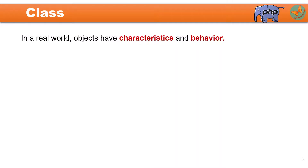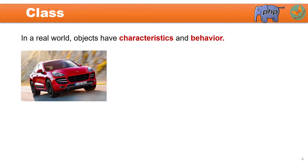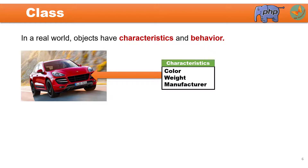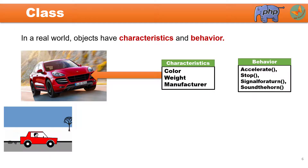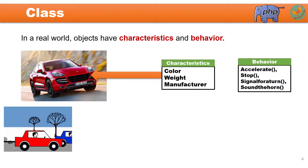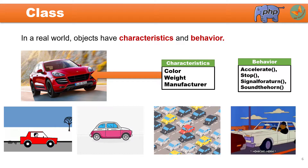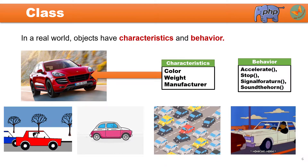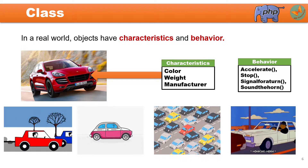Let us now try to understand what exactly is a class. In the real world, objects have characteristics and behavior. Take the example of a car. This car has characteristics or features such as color, weight, and manufacturer. The different behaviors exhibited by this car could be that it accelerates, it stops at any time, it takes a signal for a turn, or it sounds the horn. So these are the different methods or behaviors associated with this car class.